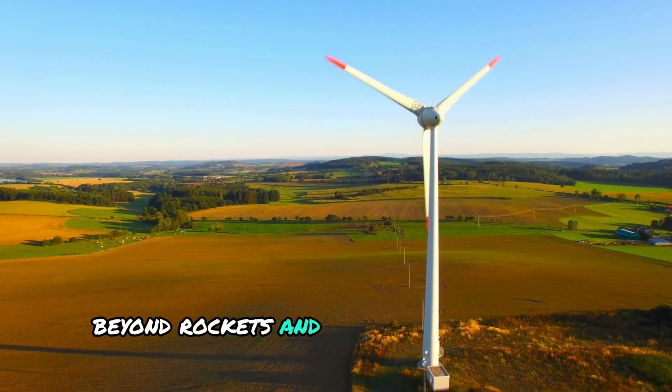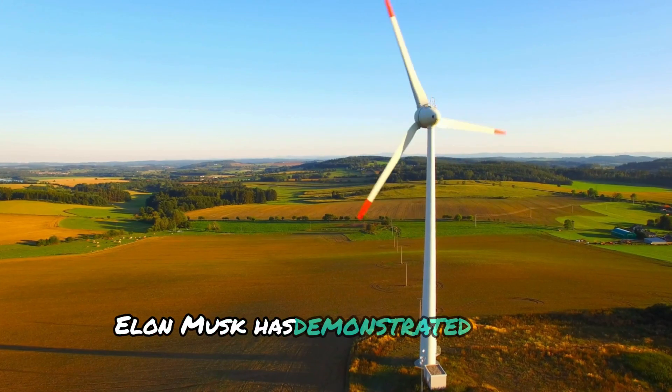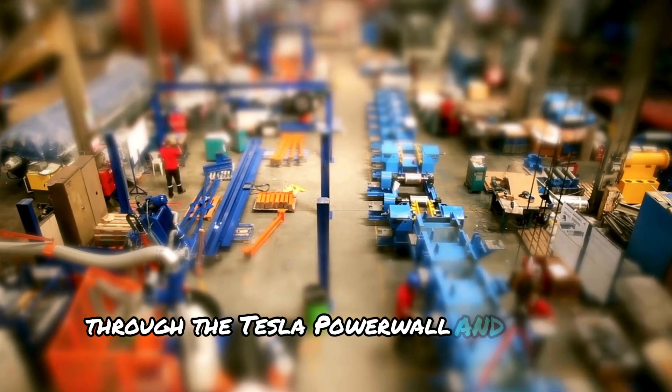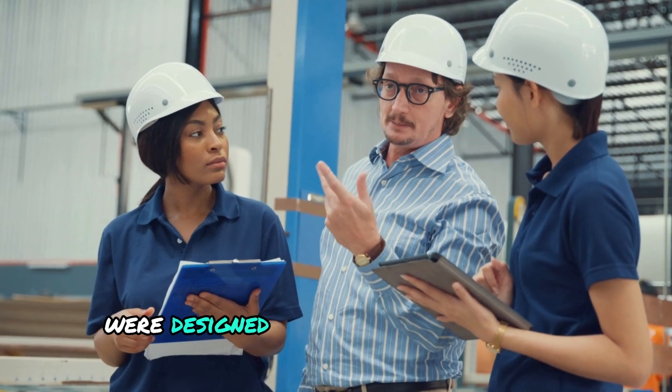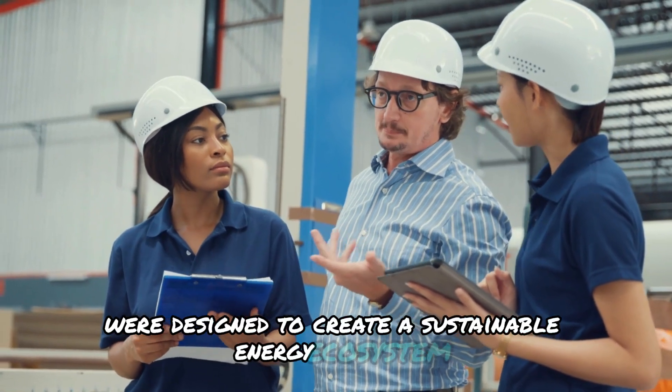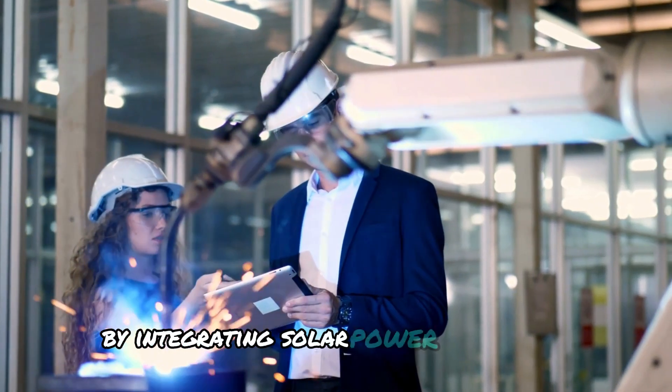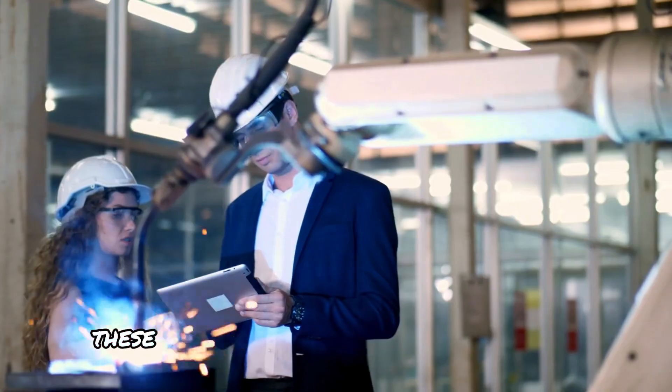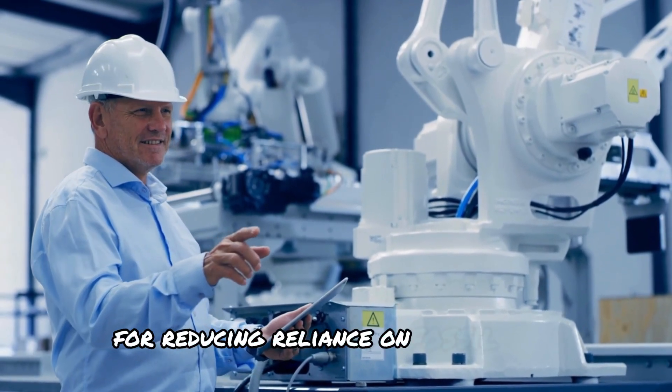Beyond rockets and early Tesla electric car models, Elon Musk has demonstrated a keen interest in sustainable energy through the Tesla Powerwall and solar roof products. Tesla solar roofs were designed to create a sustainable energy ecosystem for homes and businesses by integrating solar power generation with efficient energy storage. These products offer practical solutions for reducing reliance on fossil fuels.